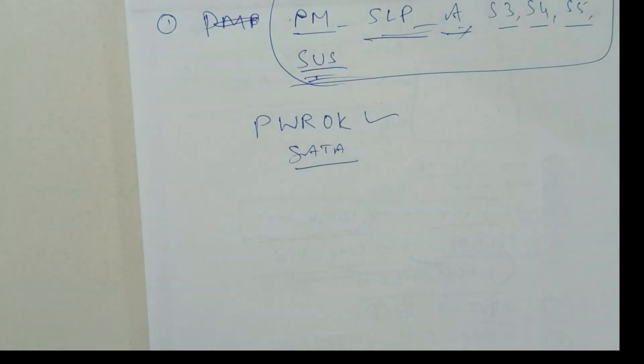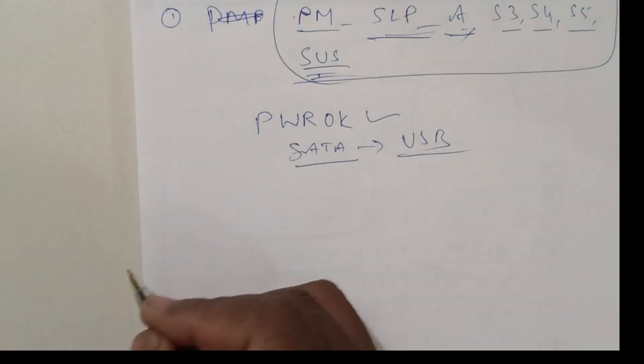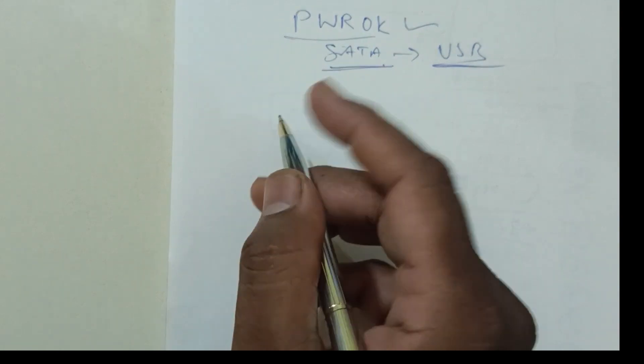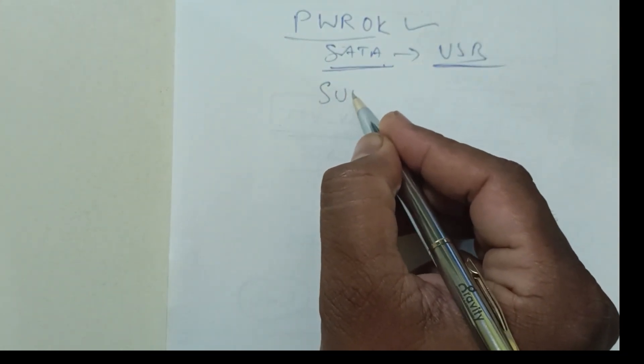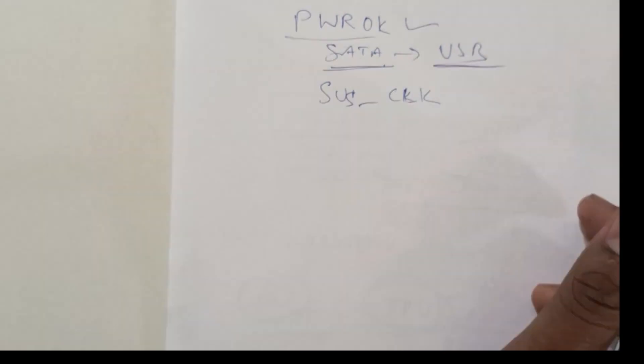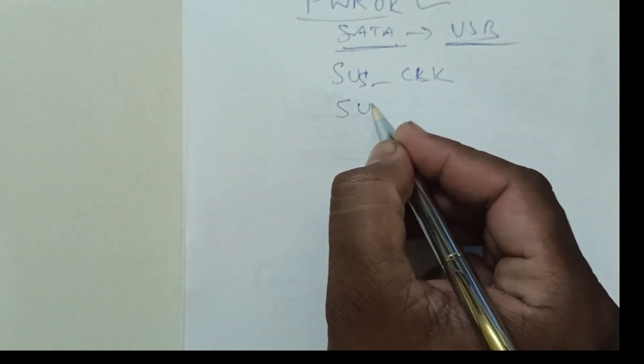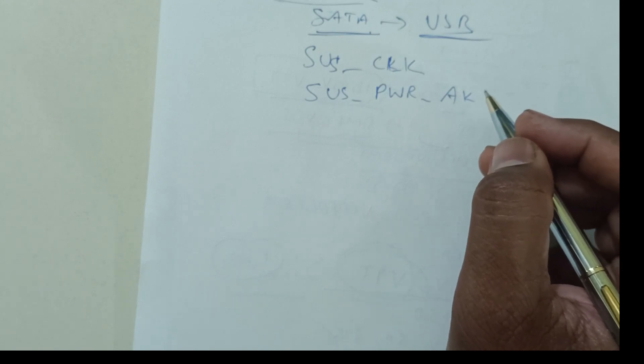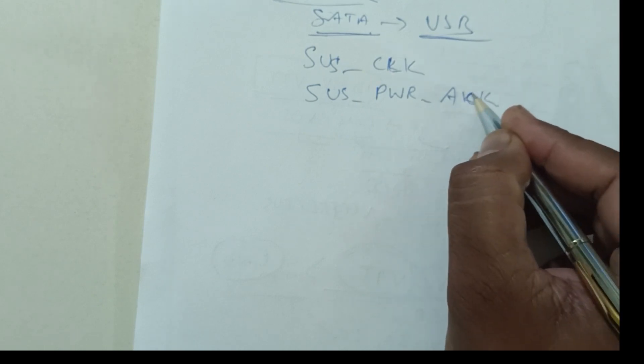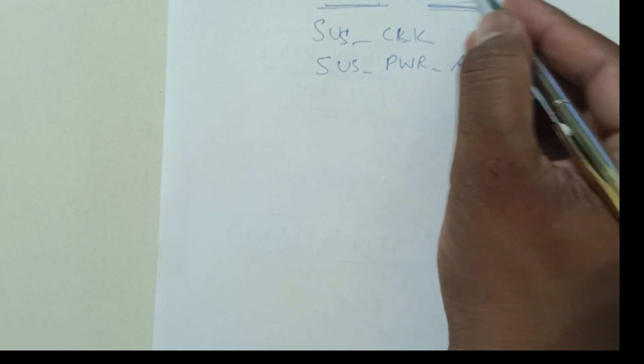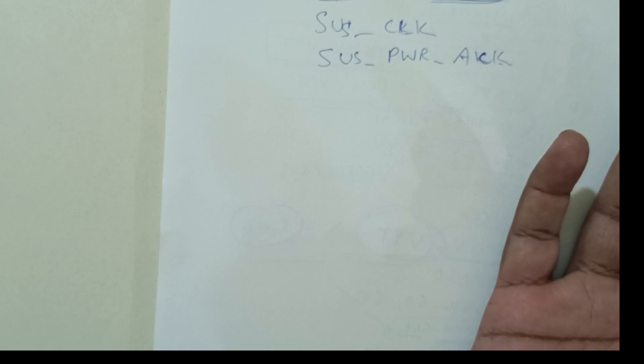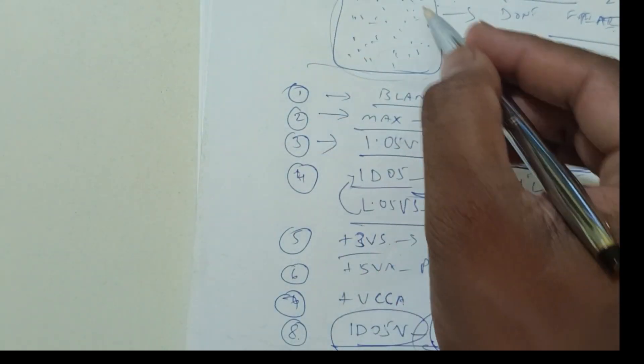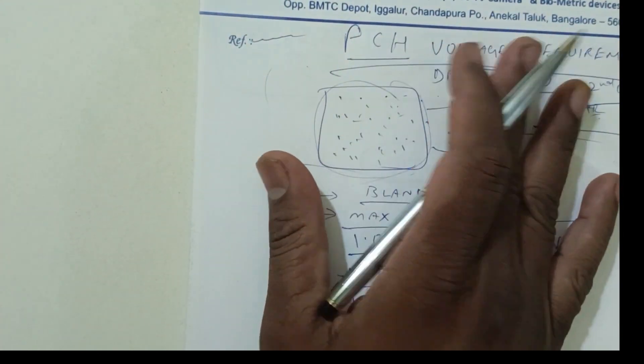All SATA voltages come through PCH only, including USB. This PCH will control the SATA and USB things. All SUS voltages, SUS clock, SUS power acknowledgement. This is also a very important voltage that I will explain in the future. Next, as I told, all USB it will control. It's very simple. Need not to scratch your head. PCH contains multiple pins, by seeing only you don't get afraid. Be patient.